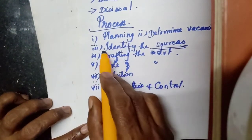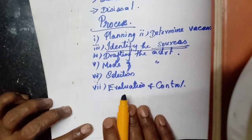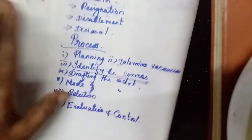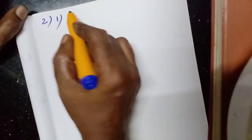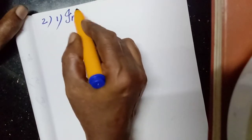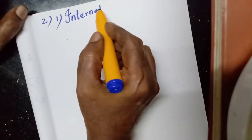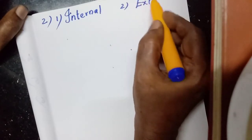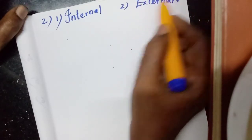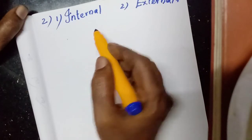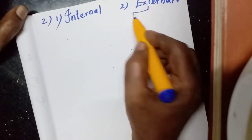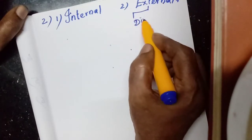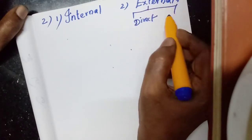In this lesson, you are going to learn the sources of recruitment. The sources of recruitment are of two types: one is internal sources, and the other is external sources. This external sources is further divided into two: direct sources and indirect sources.